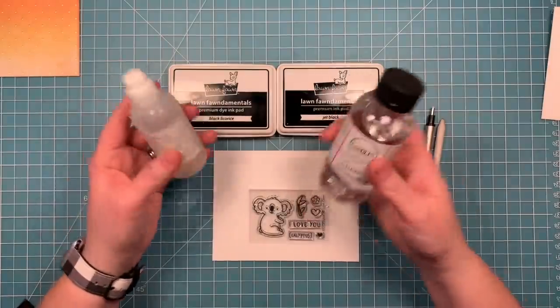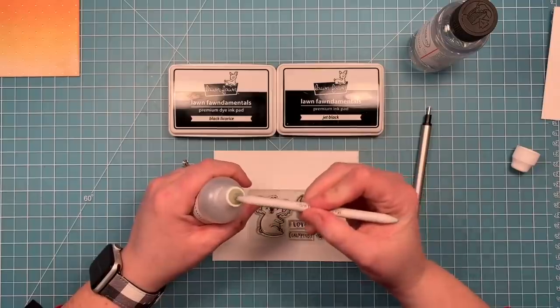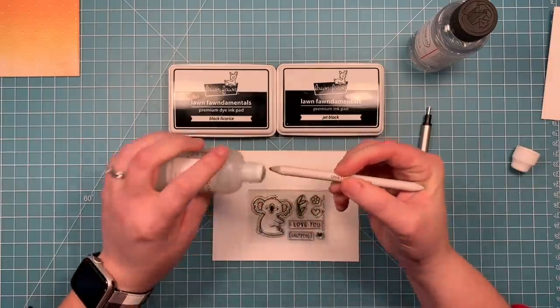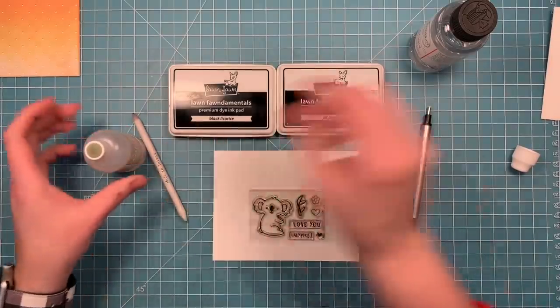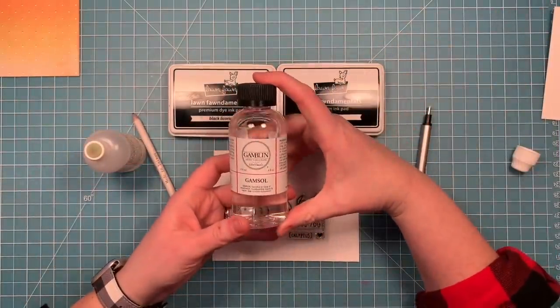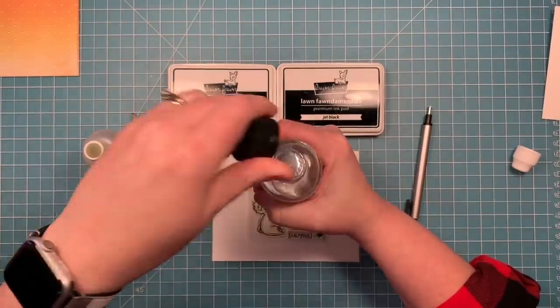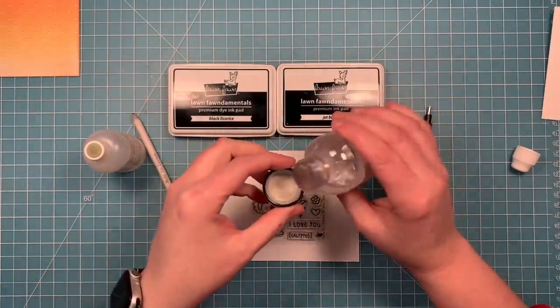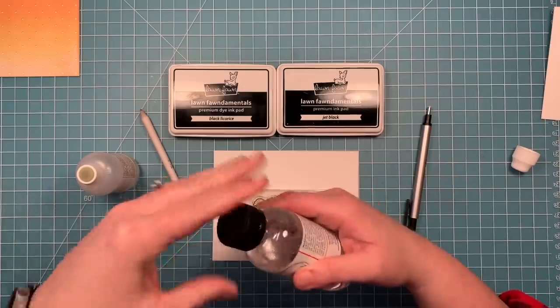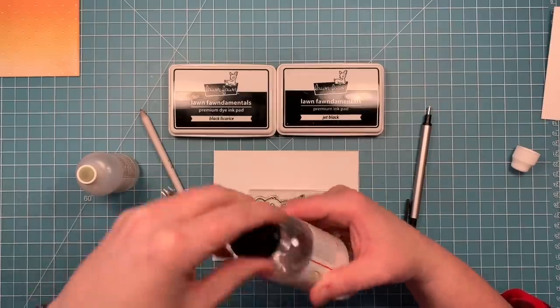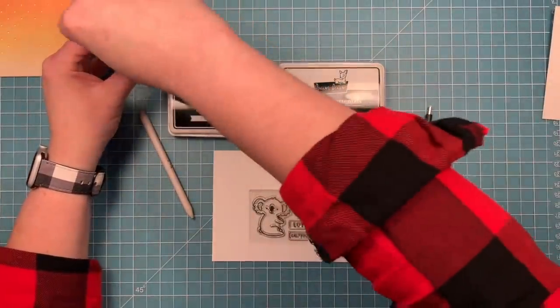I have a piece of that Neenah solar white cardstock. I'm going to be blending with Gamsol. This bottle has a little dauber top. I can take my paper blending stumps and press it against that dauber top and it absorbs into that stump, and I'm not going to make a mess. You can buy it like this at the art store. If you have a bottle like this, you can just pour a little in a cap and pick that up with your blending stump that way. I use this bottle to refill the one with the dauber top because that is how I like to work.